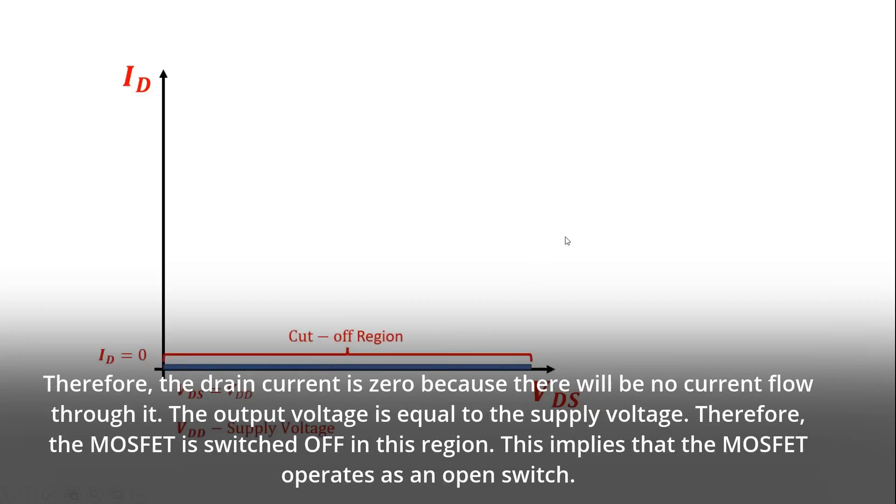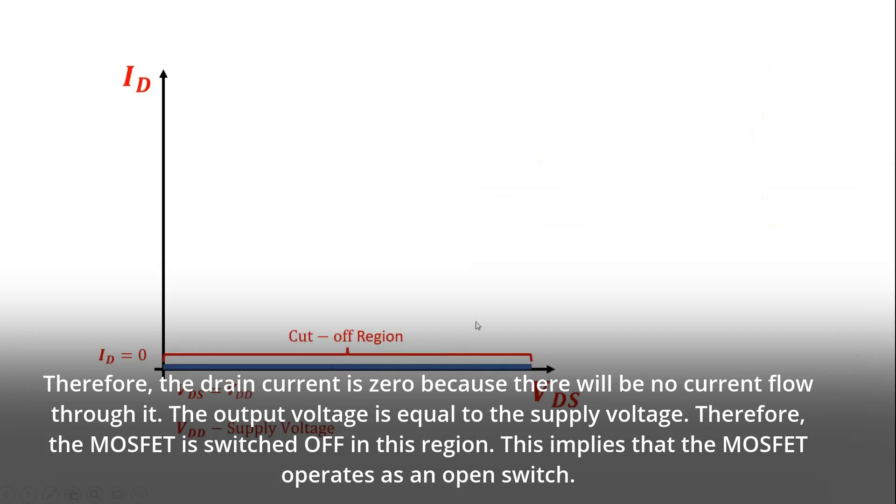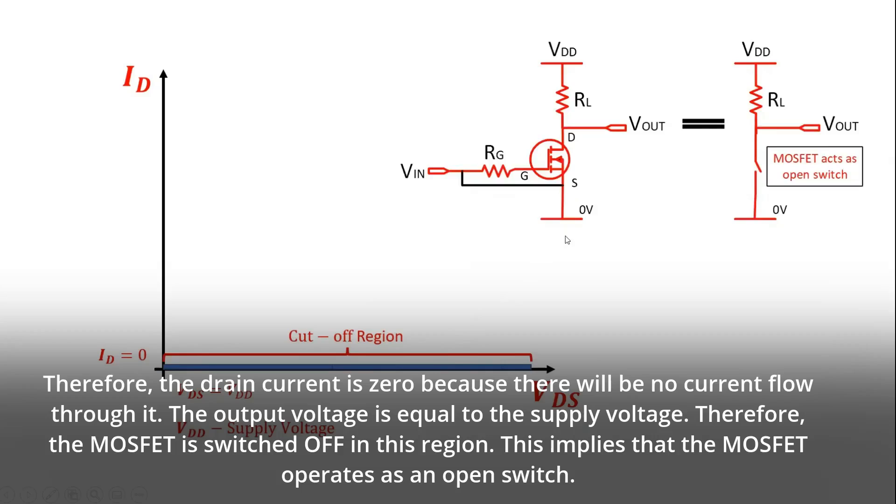The output voltage is equal to the supply voltage. Therefore, the MOSFET is switched OFF in this region. This implies that the MOSFET operates as an open switch.